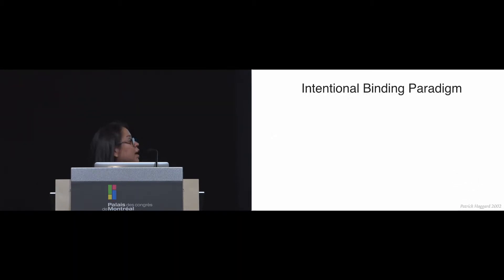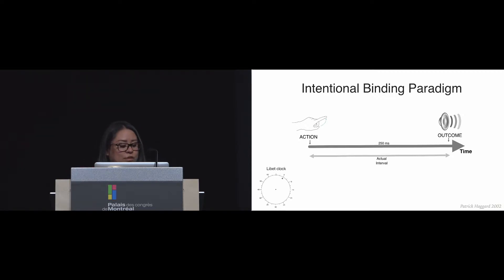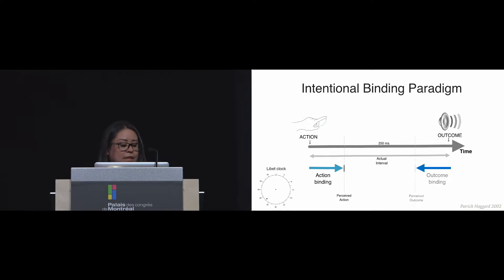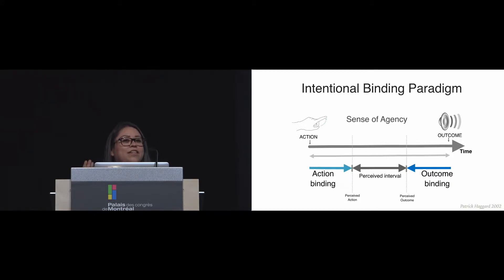The intentional binding paradigm indicates that if I perform a voluntary action — for example, a button press — that produces an outcome, for example a beep, and if the interval between these two events is fixed at, say, 250 milliseconds, then by using a clock called a Libet clock on a screen to measure perception of time, I'm going to perceive the action as having occurred a bit later compared with the actual action. This is called action binding. Similarly, I'm going to perceive the outcome as having occurred a bit earlier, and this is called outcome binding. This creates a perceived interval that is smaller than the actual interval, and a smaller perceived interval means higher action binding and higher outcome binding, which is then associated with a higher sense of agency.